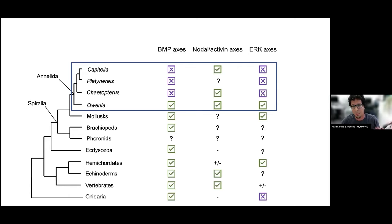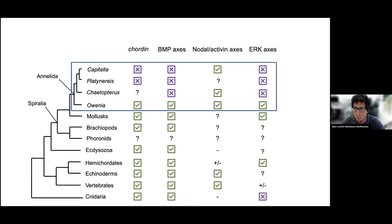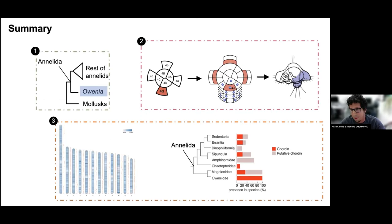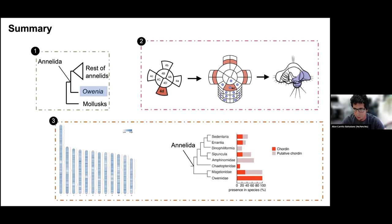We can hypothesize that those annelids that no longer use BMP may have lost this important antagonist chordin, and have switched to use nodal/activin to set up the body axis. With that, I'd like to give three main messages: Owenia is a very critical species for answering questions about the ancestral developmental mechanisms of spiralians compared to other bilaterians. We are establishing a model of how the organizer works through MAP kinase and eventually BMP to set up the dorsal posterior tissue. And lastly, it is very important that we continue sequencing genomes of new animals to better understand the impact of the loss and gain of gene families such as chordin.